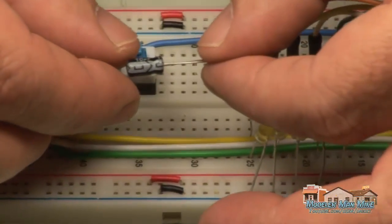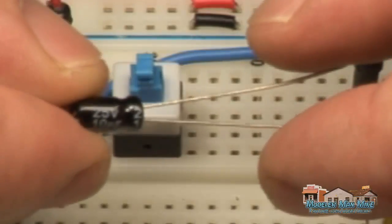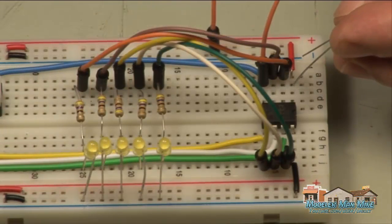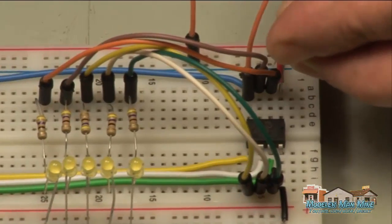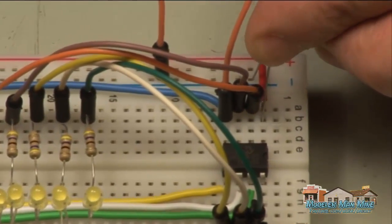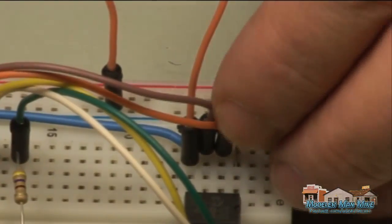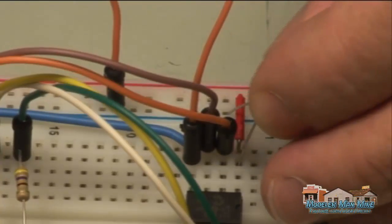And this is our 10uF capacitor. Take note of the polarity on this. It has a negative side and a positive side. It is indicated by the negative sign on this. Also it has a long lead and a short lead. So the short lead is the negative and the long lead is the positive. And I just connect the positive to pin 1 and the negative to ground.